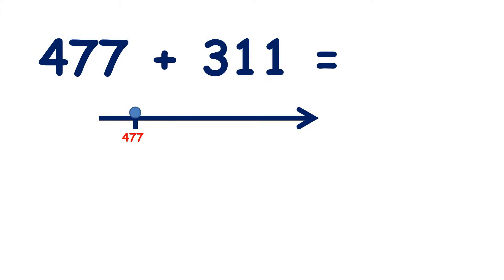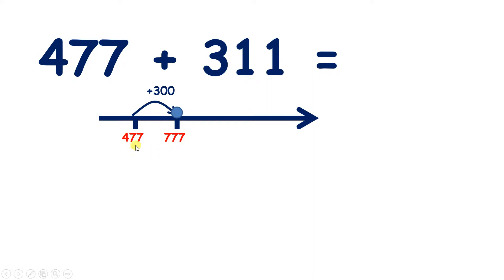We have 477 plus 311, so we need to add three hundreds, one ten, and one unit. If we have four hundreds and we add three hundreds, that gives us seven hundreds, because four plus three is seven, and we still have the seventy-seven we started with, so we have seven hundred and seventy-seven.